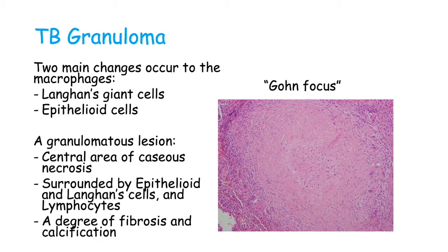What is a granuloma? As macrophages are recruited, there are two main changes occurring to these cells. One is the formation of multinucleated giant cells, also called Langerhans giant cells, which are formed by the fusion of multiple macrophages. The other is epithelioid cells, which are modified macrophages that undergo a change in shape and have the ability to produce cytokines. A granulomatous lesion presents a central area of caseous necrosis, surrounded by epithelioid and Langerhans cells, as well as lymphocytes. There will also be a degree of fibrosis and calcification.